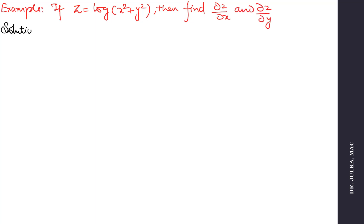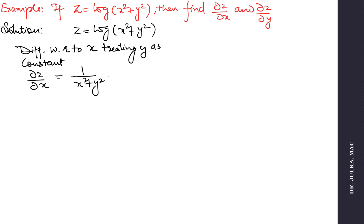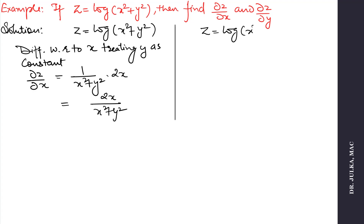z is given as log(x² + y²). Now we differentiate with respect to x, treating y as a constant, and we will get ∂z/∂x equals the derivative of log, which is 1 upon (x² + y²), multiplied by the derivative of x², which is 2x, and y² is 0 because y is constant. So the answer is 2x divided by (x² + y²).